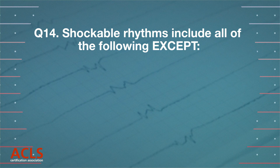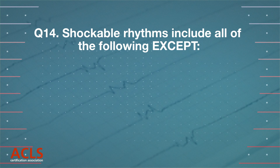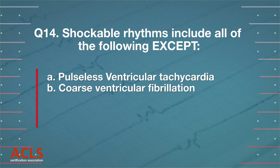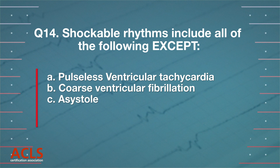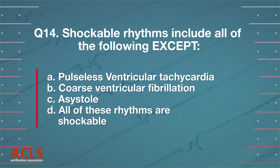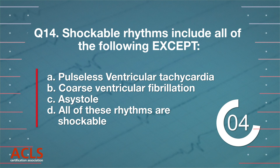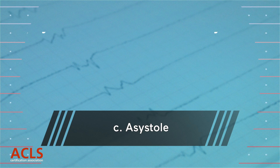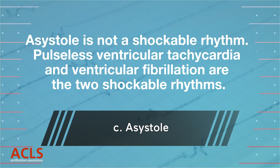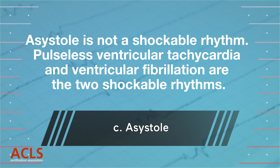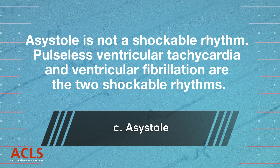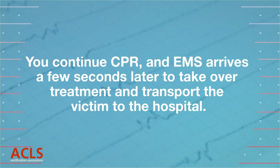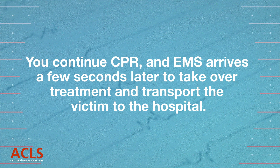Question 14: shockable rhythms include all of the following except — A) pulseless ventricular tachycardia, B) coarse ventricular fibrillation, C) asystole, D) all of these rhythms are shockable. Correct answer: C, asystole is not a shockable rhythm. Pulseless ventricular tachycardia and ventricular fibrillation are the two shockable rhythms. You continue CPR and EMS arrives a few seconds later to take over treatment and transport the victim to the hospital.